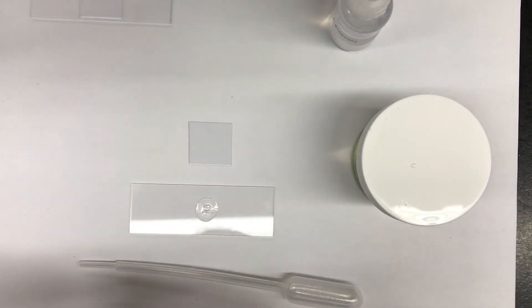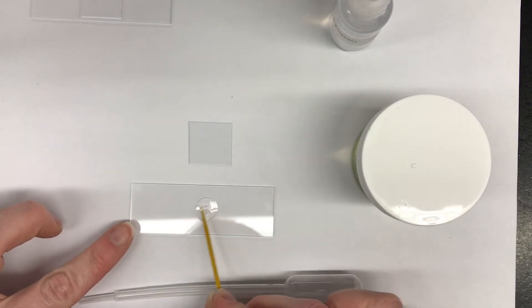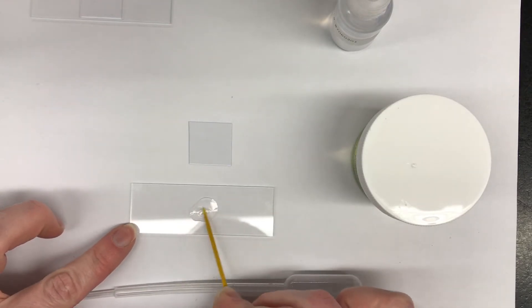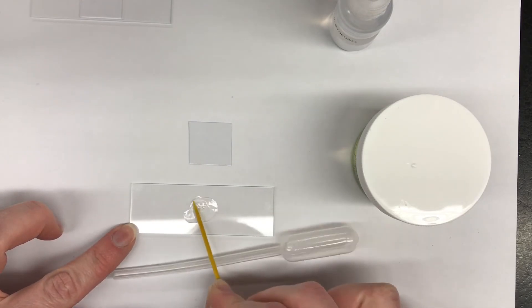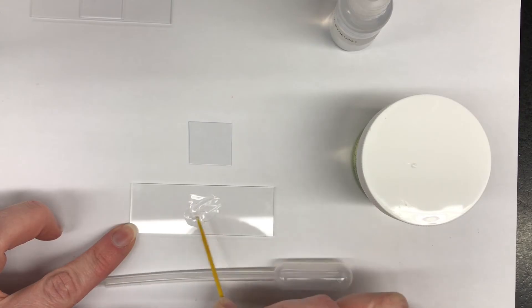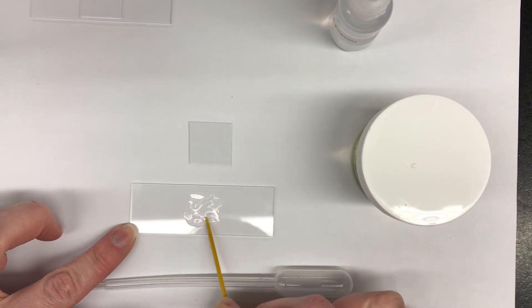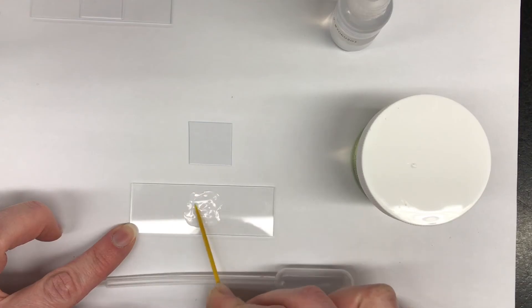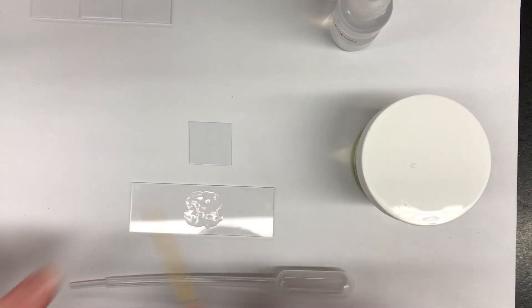We're going to take the toothpick and spread it out, try to get rid of any bubbles, and try to spread out the protosloe.